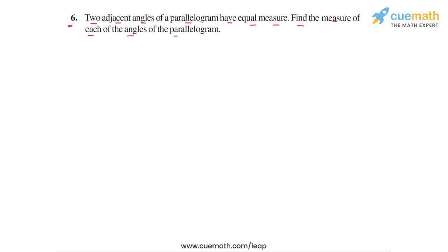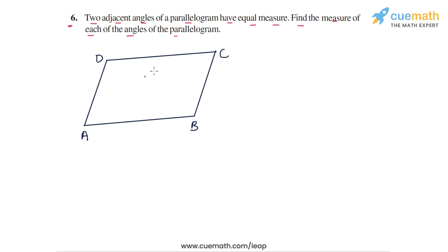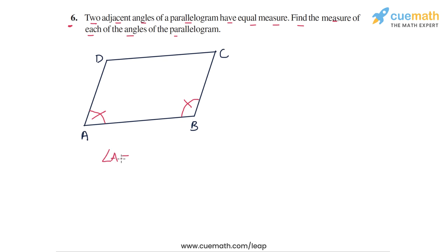Here's a figure of a parallelogram that I'm going to use for the solution. We are told that two adjacent angles of the parallelogram have equal measures. So let's suppose that in this parallelogram, angle A and angle B are equal. Let's start with this assumption that angle A and angle B are equal.